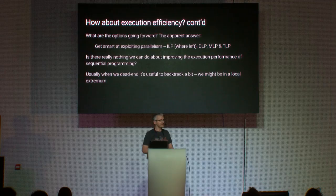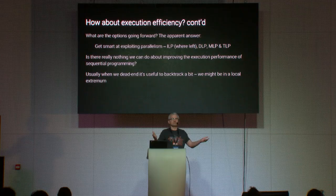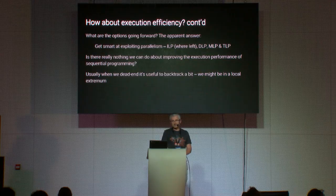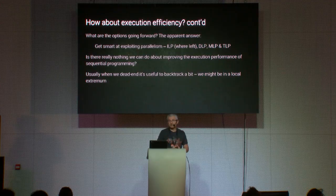When two forces pull a heavy load and one dies off, the other gets all the weight. All pressure for delivering performance advances fell on language, toolchain, and API developers — a situation that couldn't last indefinitely and eventually translated onto application developers. The very apparent answer going forward is to get smart at using parallelism: instruction-level parallelism, data-level parallelism, memory-level parallelism, and task-level parallelism.